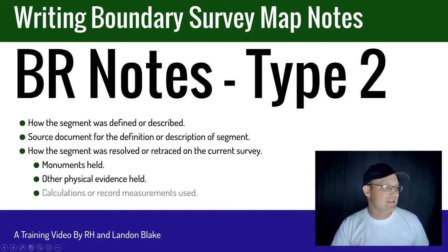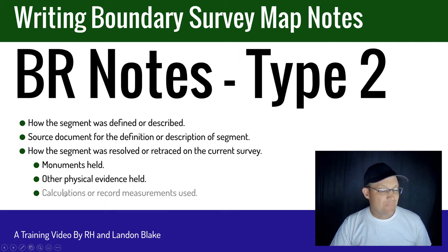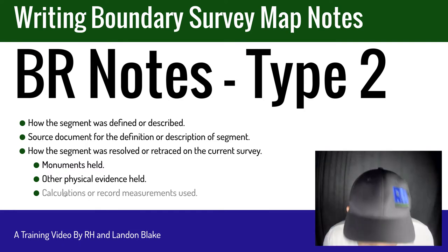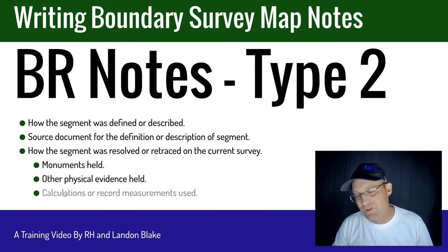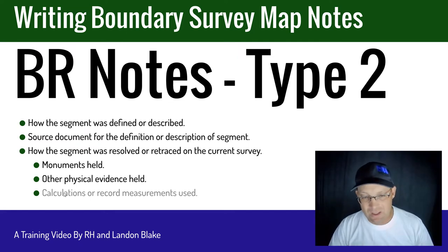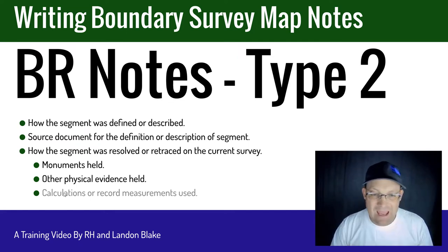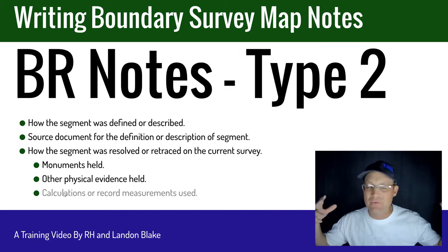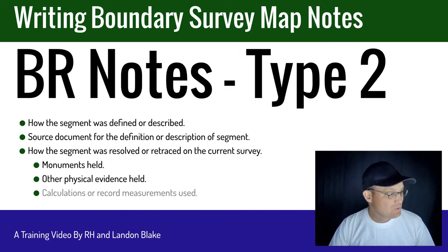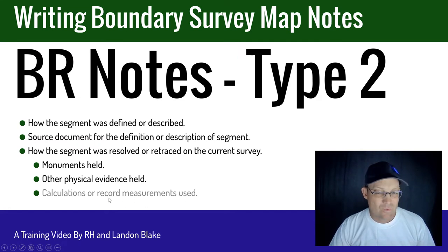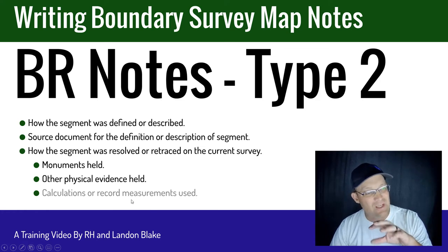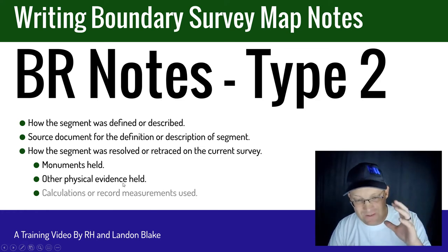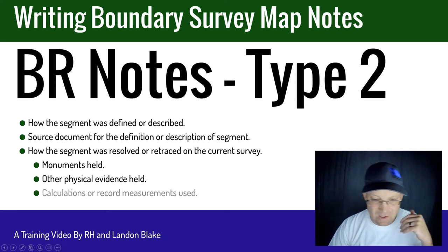The third sub-element is shown in gray because there's a cycle here. Let's say we've got a line in a deed and we didn't find a monument on either end. I have to do some kind of calculation to determine where that line is. Well, that calculation has to in turn be based on some physical evidence on the ground. All boundary resolutions have to tie back to the ground at some point. So you've got to link that resolution — that calculation or record measurement — back to some physical evidence on the survey. If you're not sure, get help from your LS.